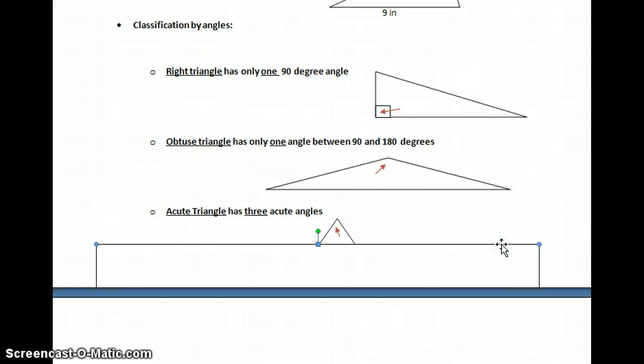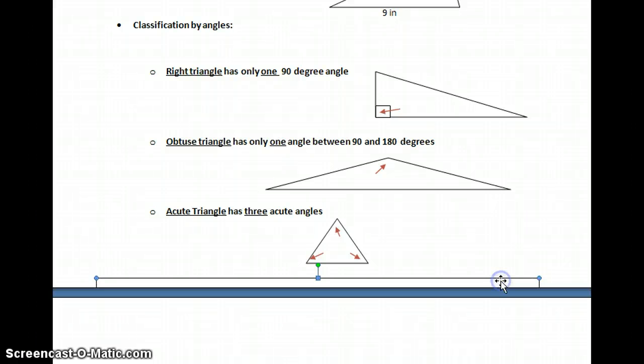And then, my third type that we identify by angles is called the acute triangle. The acute triangle has three acute angles.